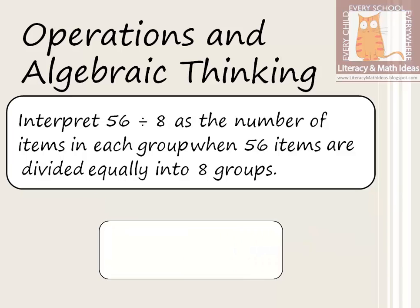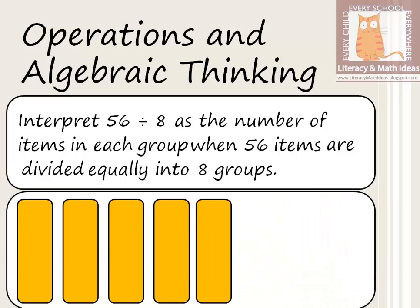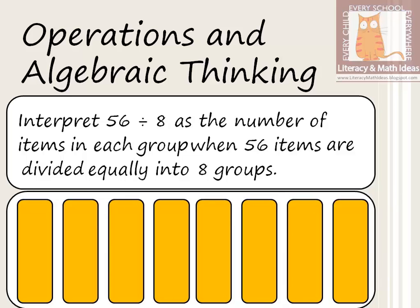This goes back to the first approach: how many items are in each group when 56 is divided into 8 equal groups? Here I'm showing 8 groups — they could be 8 friends, 8 boxes, 8 bags. We want to answer how many items will be in each group if 56 items are divided evenly among them. Distributing one by one, after the first round 8 items have been given out, then 16.